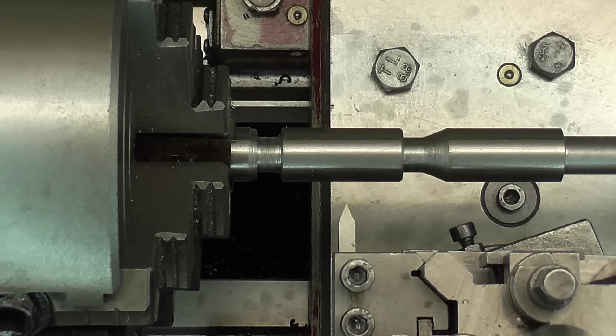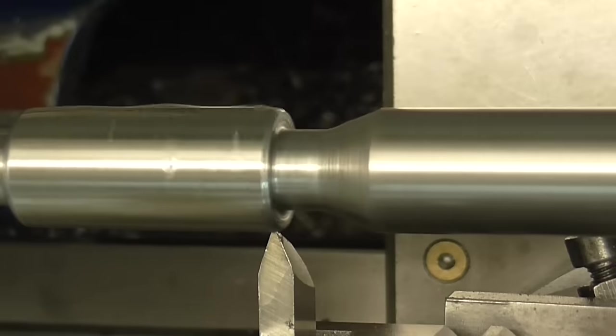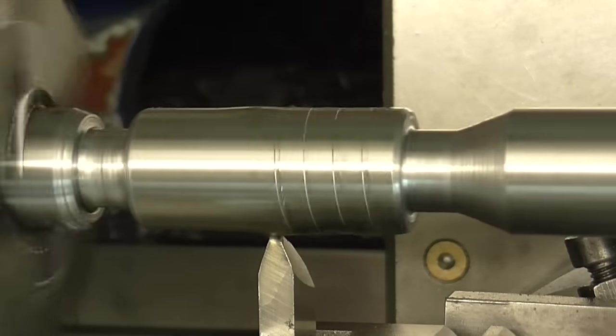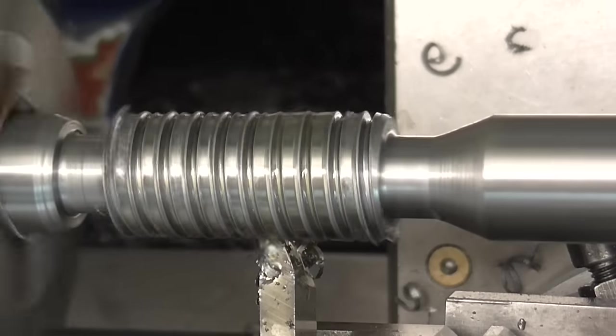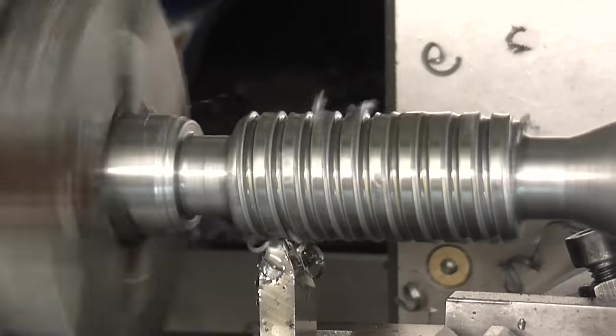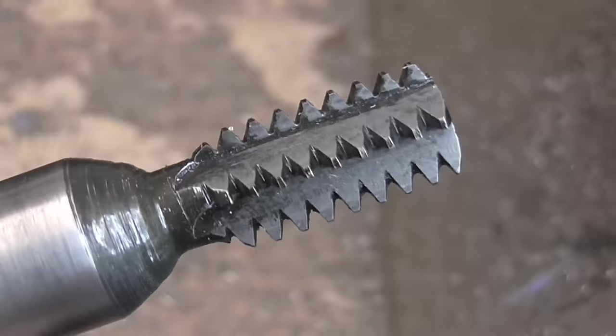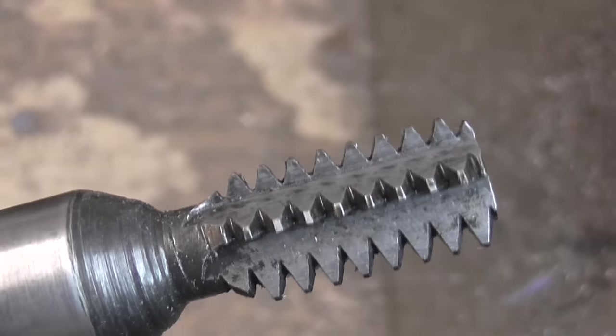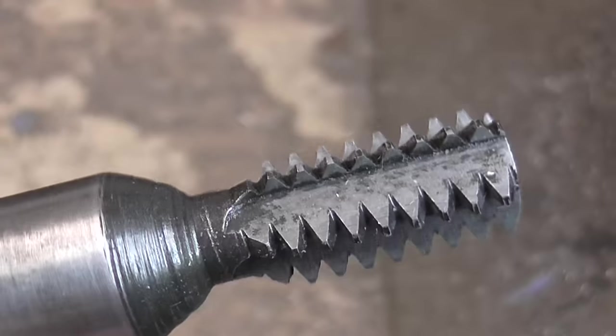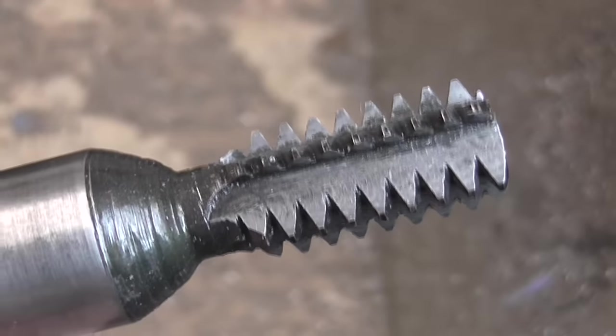I'm going to turn both the worm and the hob to cut the worm wheel from tool steel and harden and temper them. This will be the worm. And this is the hob after I've cut teeth into it. It's not actually identical to the worm, it's slightly larger diameter and has pointier teeth.